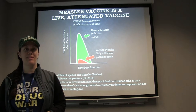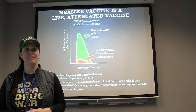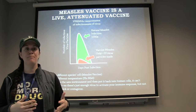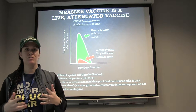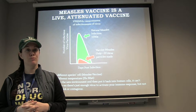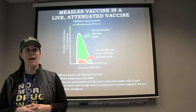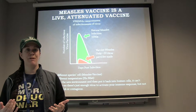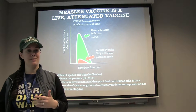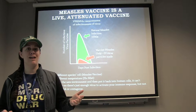One common concern with attenuated vaccines is that people are afraid that because it's a live virus, it's going to suddenly revert back to its original human virus form and cause real infection, real disease, and also be contagious. I want to show you a little more detail about why the likelihood of a vaccine virus reverting back to its original form is very, very unlikely.